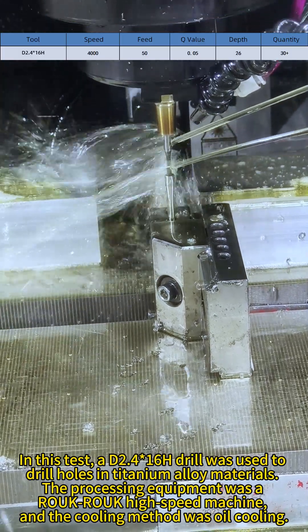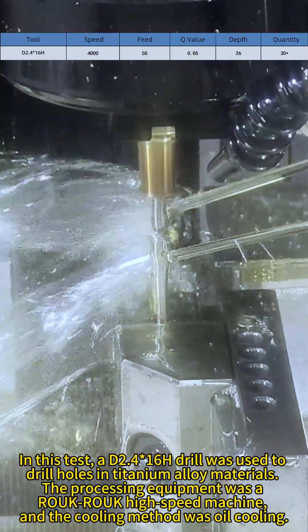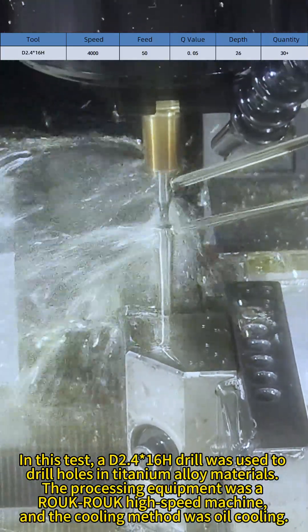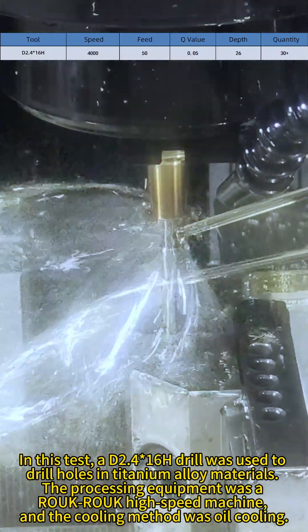In this test, a D2.4x16H drill was used to drill holes in titanium alloy materials. The processing equipment was a rope high-speed machine, and the cooling method was oil cooling.